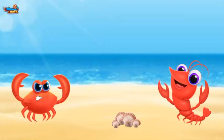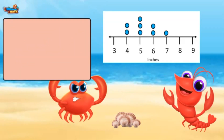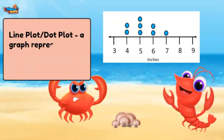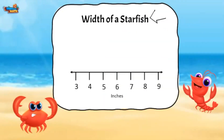Today we will talk about representing data on a line plot. A line plot, sometimes called a dot plot, is a graph representing data using a number line and dots. The title of this line plot is 'Width of a Starfish.' The number line represents the inches wide each starfish measures, and the dots on the line plot represent how many